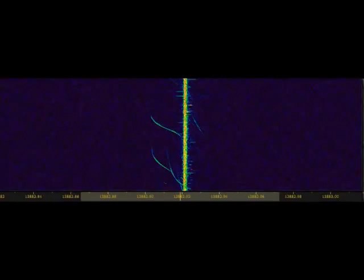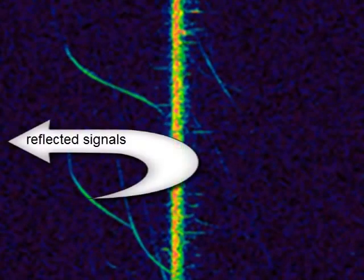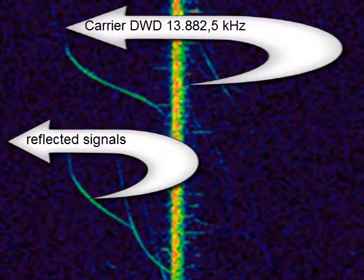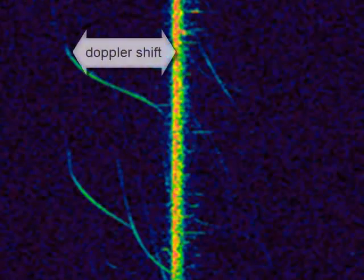Hello. In this short video I would like to show you how to receive reflected signals of shortwave stations reflected by jets as well as meteorites. Because these reflecting objects are moving, the reflected frequency has a frequency shift due to the Doppler shift.